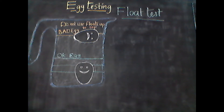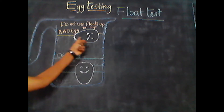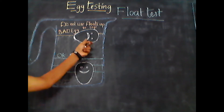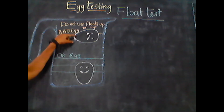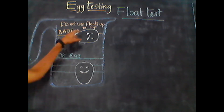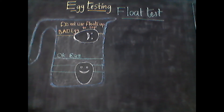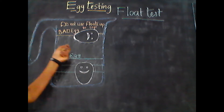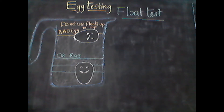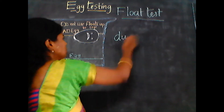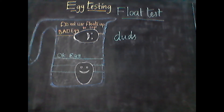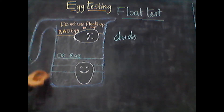Next, 45 to 50 percent of the egg surface is floating over the surface of water due to ruptured membranes inside. These are called high floaters, or duds, and will not hatch out; hence they are to be discarded.